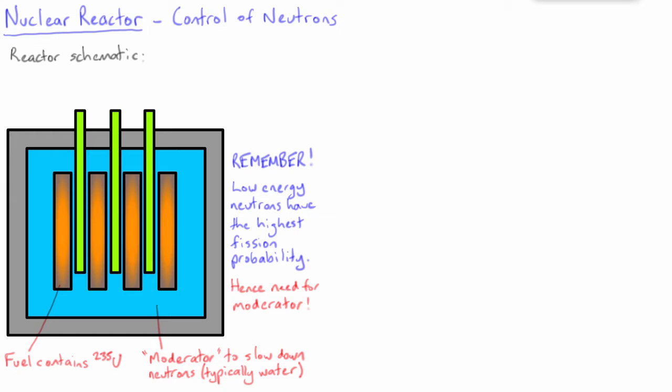Water works well as a moderator because the neutrons have almost exactly the same mass as the protons that make up the hydrogen component of the water. The similar masses mean that it is possible for the neutron to lose all of its energy in a single head-on collision with a proton.